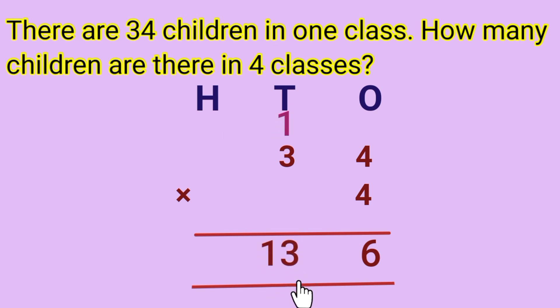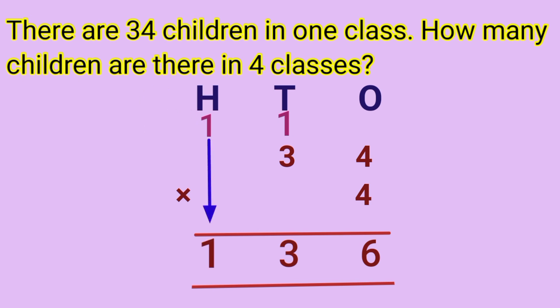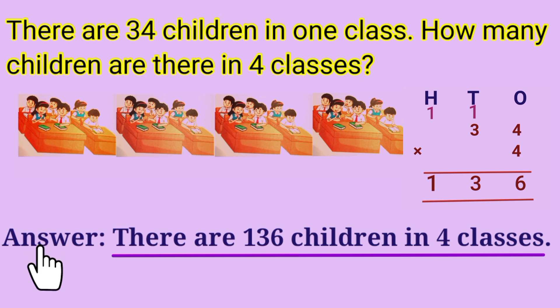Next, multiply the tens place: 3 multiplied by 4 is equal to 12. Add the carry-over of 1, making it 13. Since 13 is a 2-digit number, we put 3 in the tens place and carry 1 over to the hundreds place. In the hundreds place there is only one number, so we put 1 there. So the answer is 34 multiplied by 4 equals 136. There are 136 children in 4 classes. Thank you, children — see you next class!